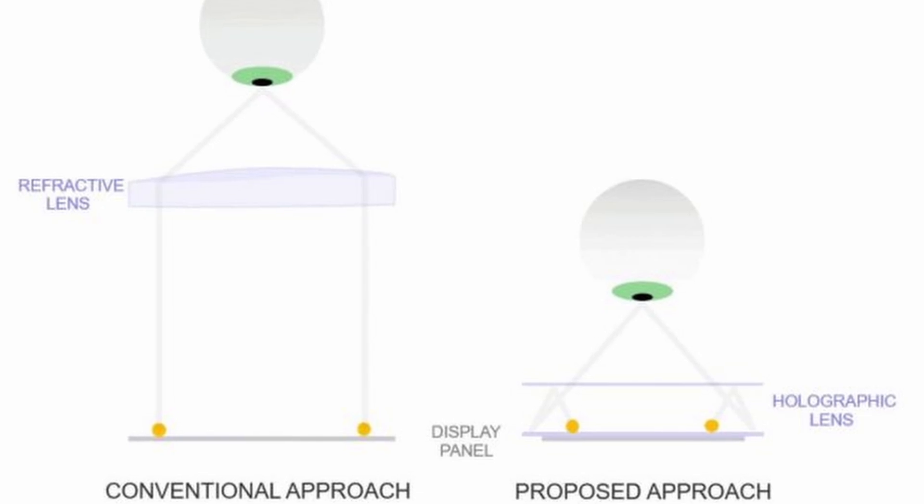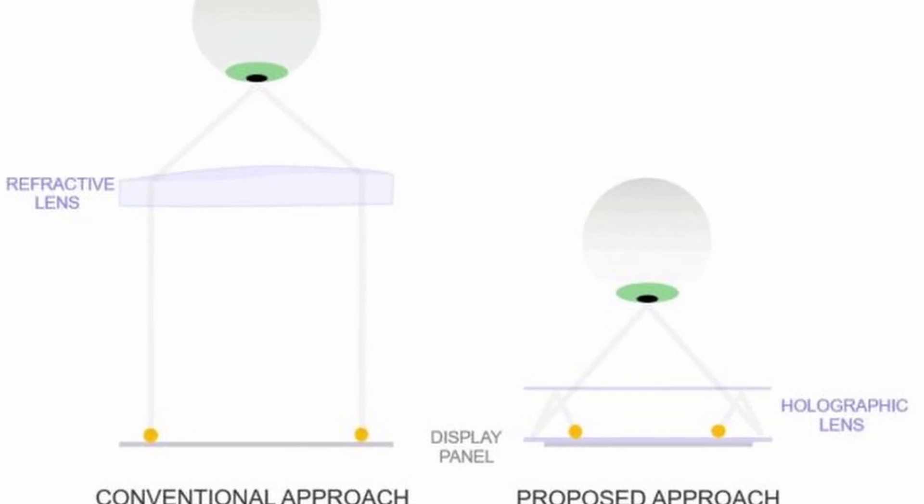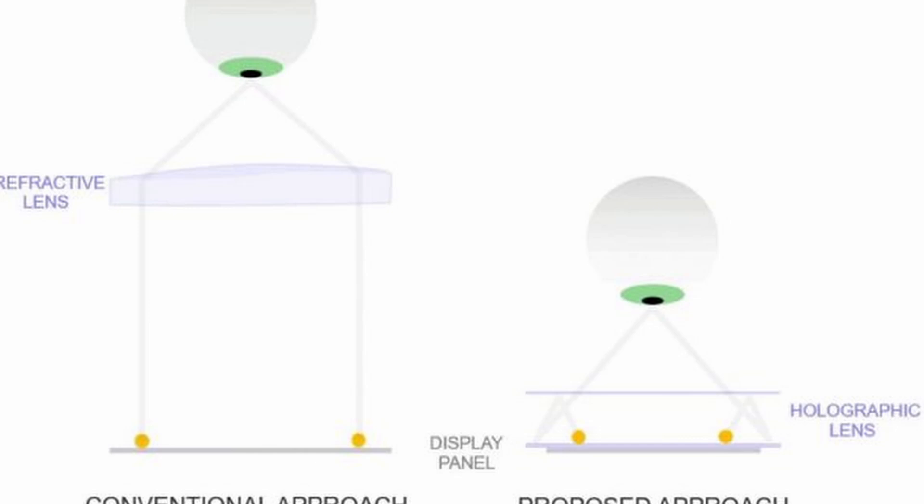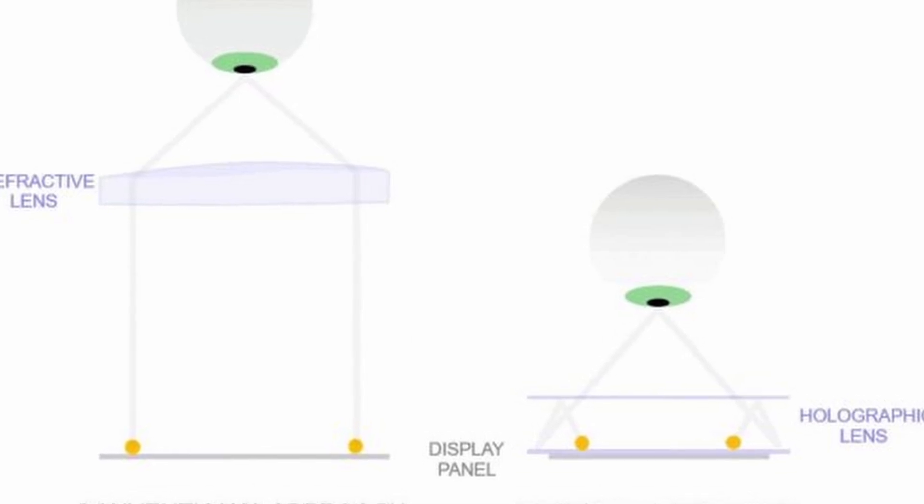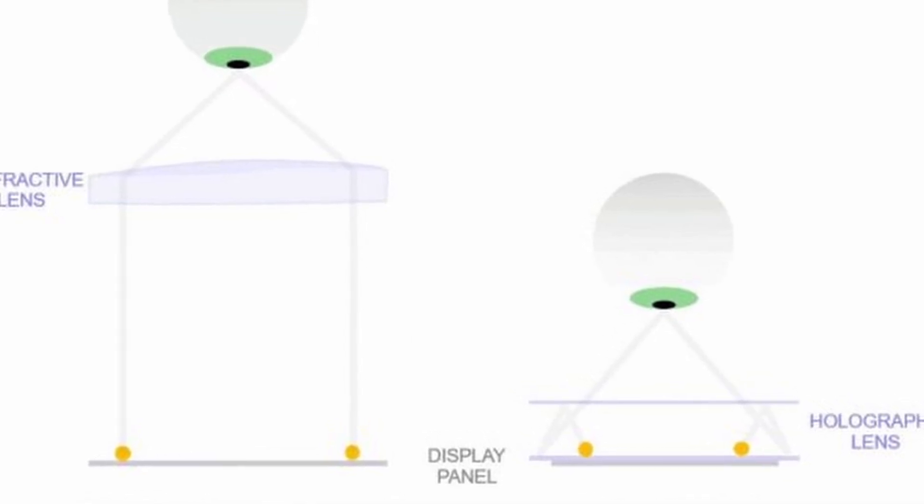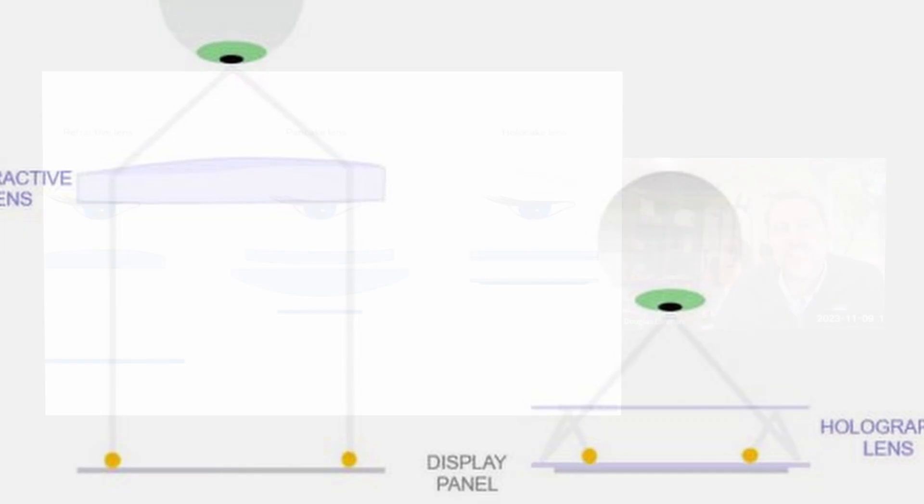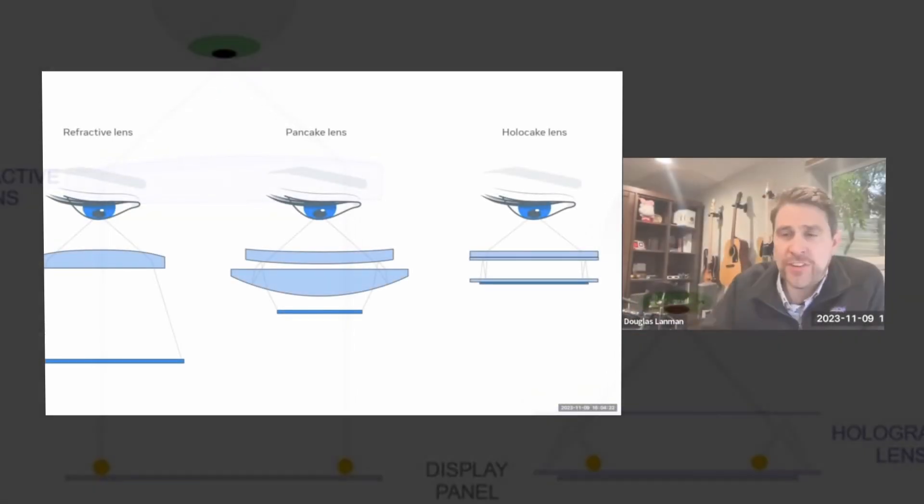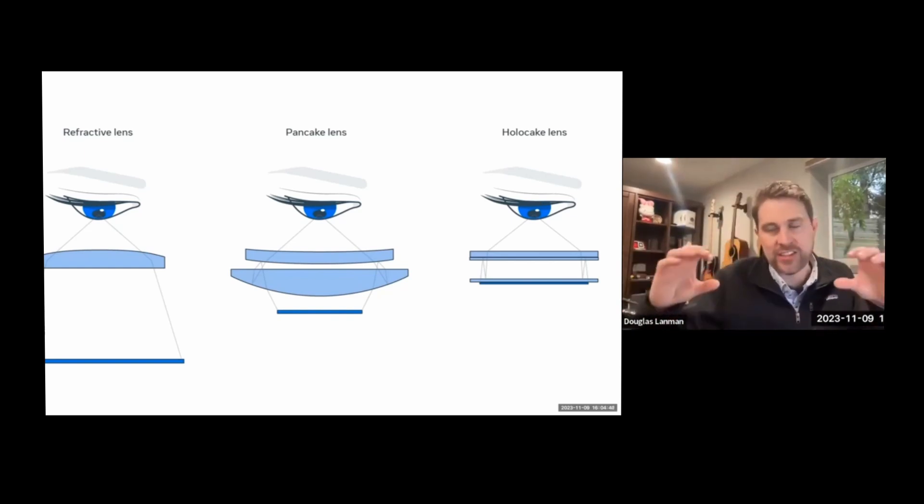The hollow cake lens. The current headsets, like the Quest 3, use pancake lenses, which is the next generation from Fresnel. Each new generation of optics has a smaller form factor. The reasons the Quest 3 is smaller than the Quest 2 is because of these new lenses. But that technology goes even further.